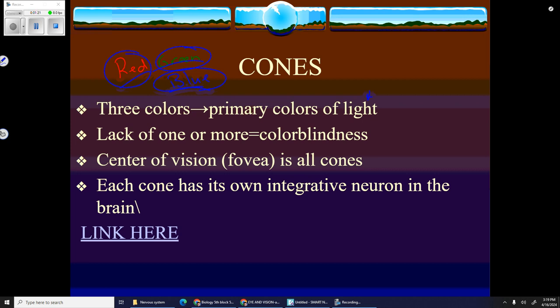Lack of one or more of these is colorblindness. For some reason, those cones aren't sensitive to those colors of light. Probably you're lacking a protein that is produced by your DNA.